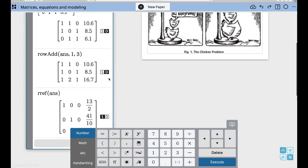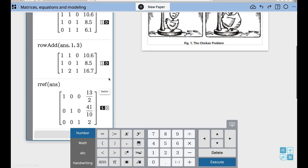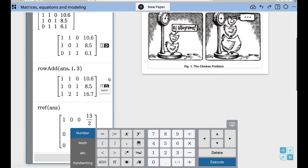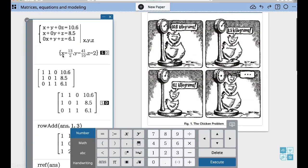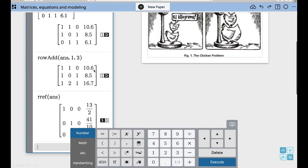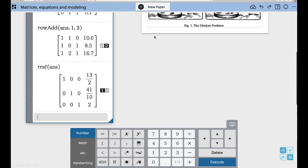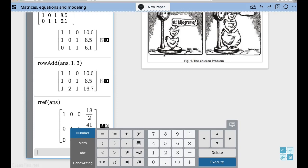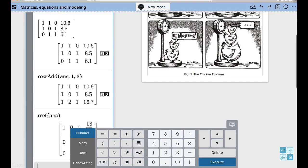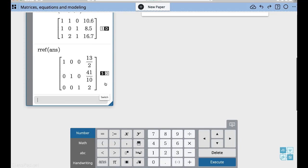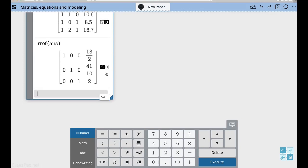So I just press RREF, row reduction echelon form. It gives me that same solution matrix that we had earlier. Again, that doesn't help me answer the question, which is what do each one of those, what does the sum of each one of the chickens add up to be. But that's got me thinking. There is other ways to solve matrices.